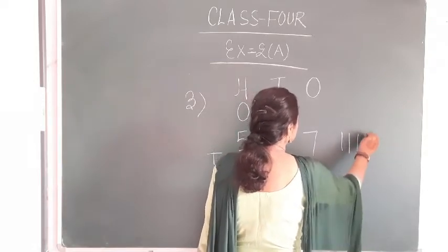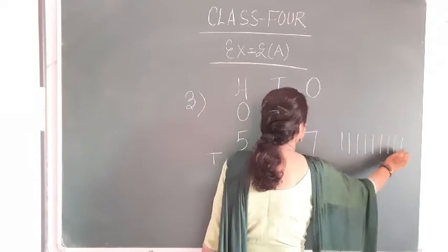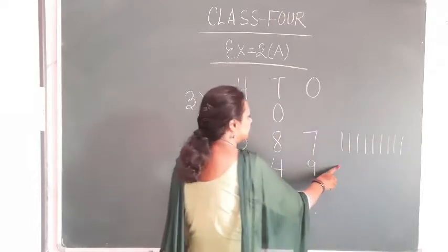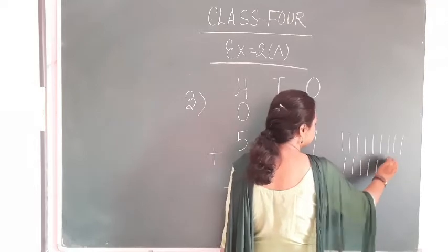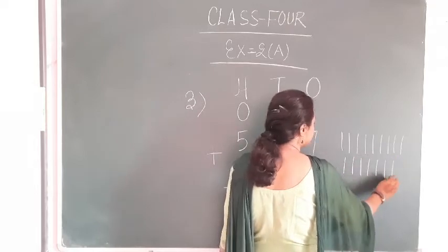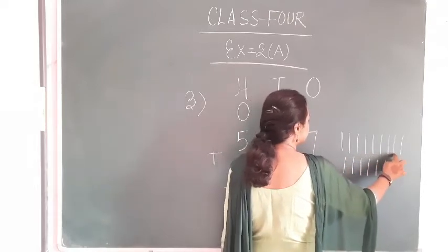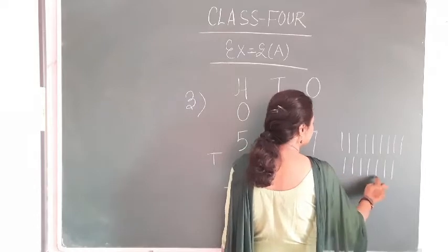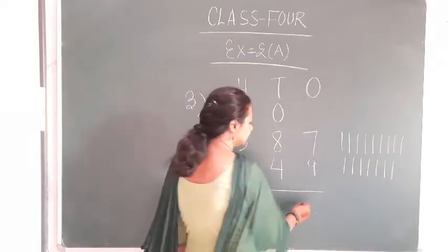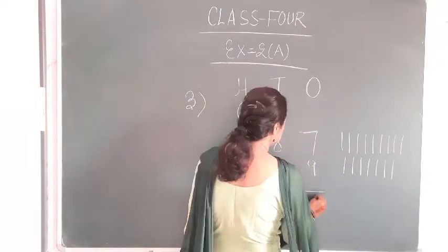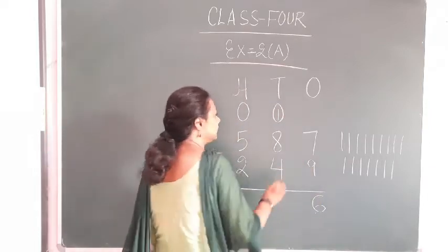Counting 1 through 9 in the ones place. Then 7: counting 1 through 7. Total count: 1 through 16. This is 6, write 6 and carry 1.